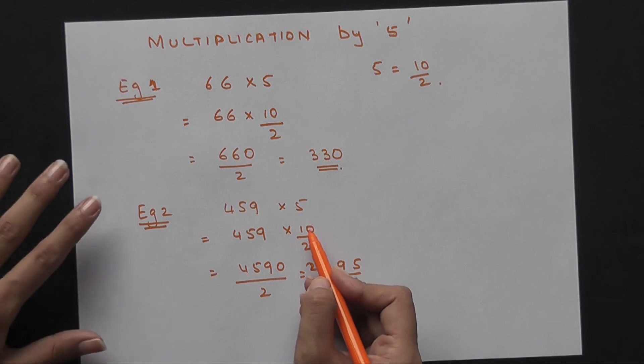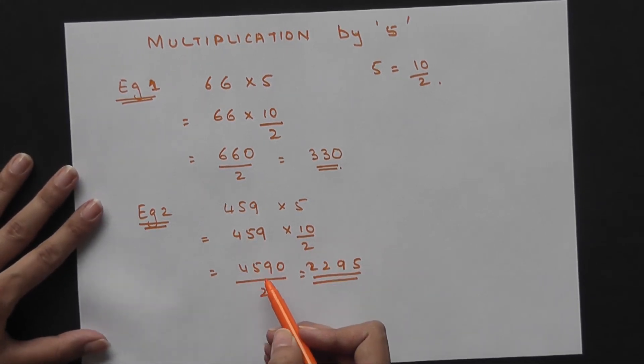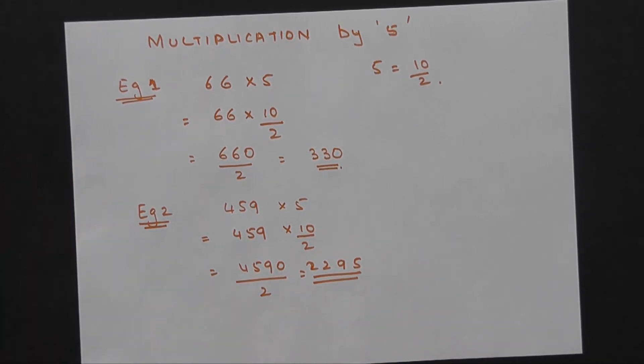You can always skip the step and jump directly to 4590 by 2 because you know 5 is 10 by 2.